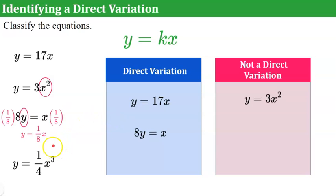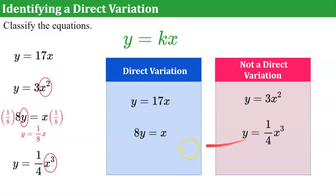Let's look at our last equation. The X term has an exponent of 3, so therefore it is not a direct variation because the exponent is not 1. Remember, even though it's invisible, the required exponent is 1.